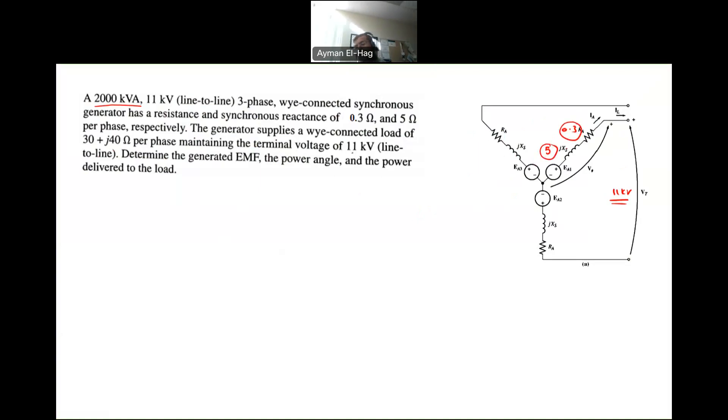The generator is actually connected to a load with certain impedance, which is 30 plus J40. So we are not given how much power is delivered, but we are given the impedance of the load, which will help us later on to find IA. We want to find the internal generated voltage, and we want to find the power angle and the power delivered to the load.